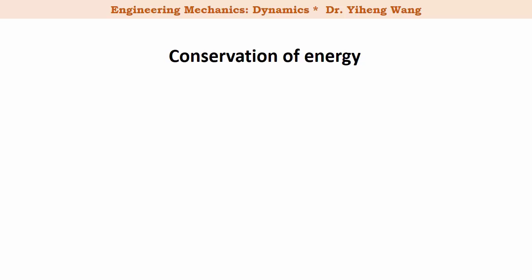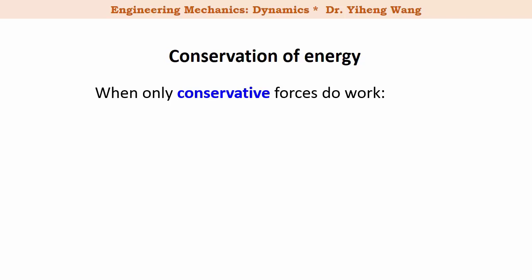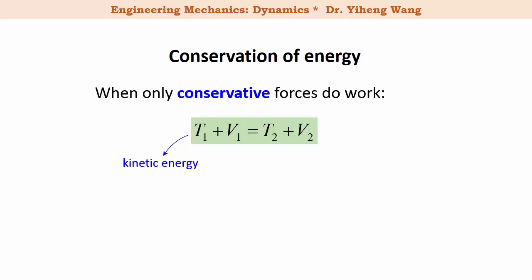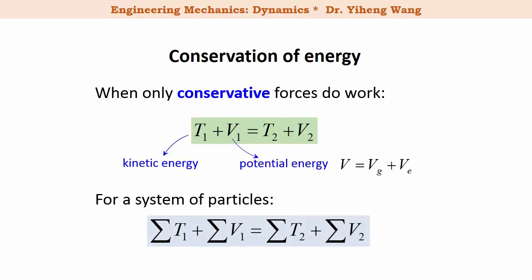With the definition of potential energy, the principle of work and energy can now be rewritten into the conservation of energy, which only applies when all the forces doing work are conservative forces. If non-conservative forces such as frictional force are doing work, you cannot apply the conservation of energy. The conservation of energy equation is T1 plus V1, the total energy at state one, equals T2 plus V2, the total energy at state two. T is the kinetic energy — one-half times mass times speed squared — and V is the potential energy, which generally includes both gravitational potential energy and elastic potential energy. The conservation of energy can also be applied to a system of particles, as long as all external forces doing work are conservative forces.